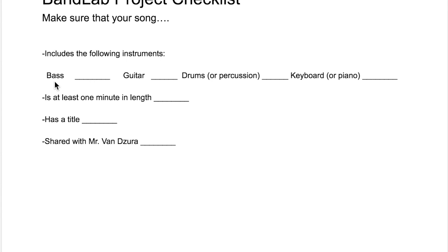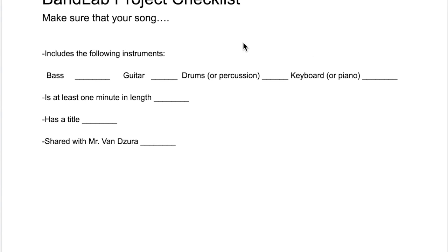You should have a bass part, a guitar part, a drums or percussion part, and a keyboard or piano part. I will grade based on the fact that you have all four instruments. You need to have all four of these in your project. If you have three out of the four, you will be marked down for that.